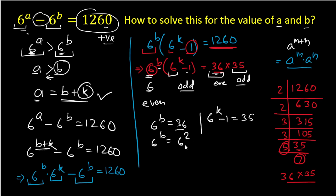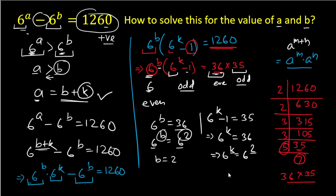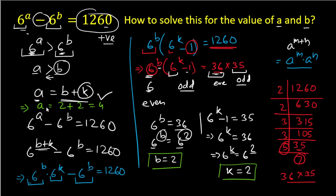From 6^b = 36 = 6², the bases are equal so b = 2. From 6^k − 1 = 35, we get 6^k = 36 = 6², so k = 2. Since a = b + k, we have a = 2 + 2 = 4. Therefore a = 4 and b = 2.